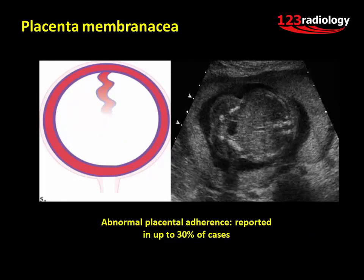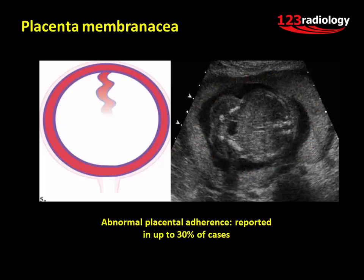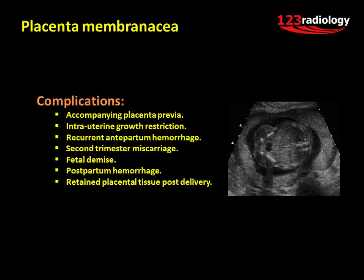Placenta membranacea is an extremely uncommon variation in placental morphology in which the placenta develops as a thin membranous structure occupying the entire periphery of the chorion. It may be associated with abnormal placental adherence, reported in up to 30% of cases. On ultrasound, the placenta circumferentially covers most or all of the entire uterine wall. Recognized complications include placenta previa, intrauterine growth restriction, recurrent antepartum hemorrhage, second trimester miscarriage, fetal demise, postpartum hemorrhage, and retained placental tissue post delivery.